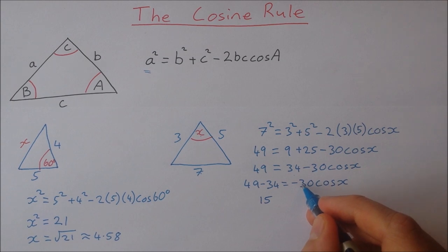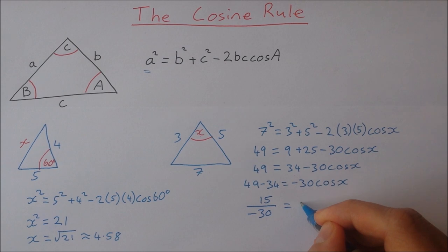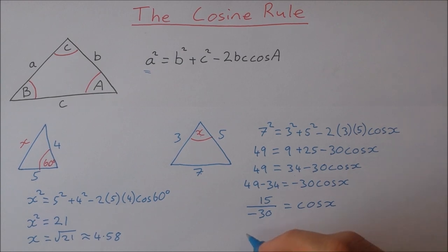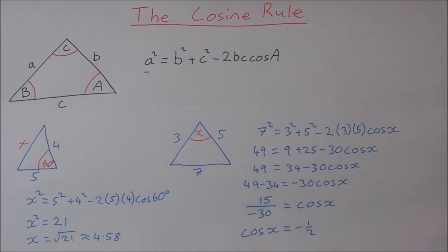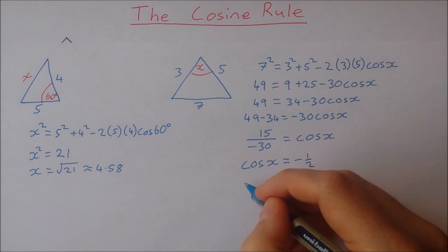I'm going to divide now by minus 30. And I have cosine x on its own. Now 15 divided by minus 30 is minus a half. So the cos of x is equal to minus a half. Now if we have the cos of x and it's minus a half then I just use my cos inverse.